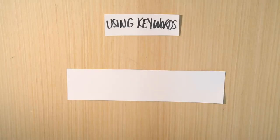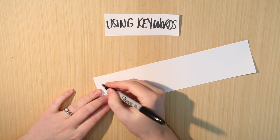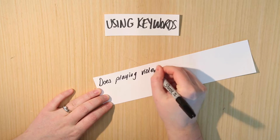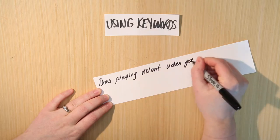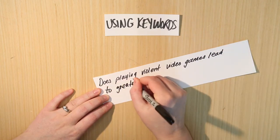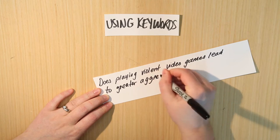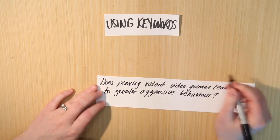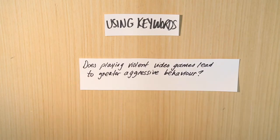The first step is to decide what keywords you're going to use. The first step in determining what keywords you're going to use is to determine what your actual research question is. My question is: does playing violent video games lead to greater aggressive behavior? This is not the research question you're necessarily going to use for your actual project — it's just the one I'm using for the purposes of an example.